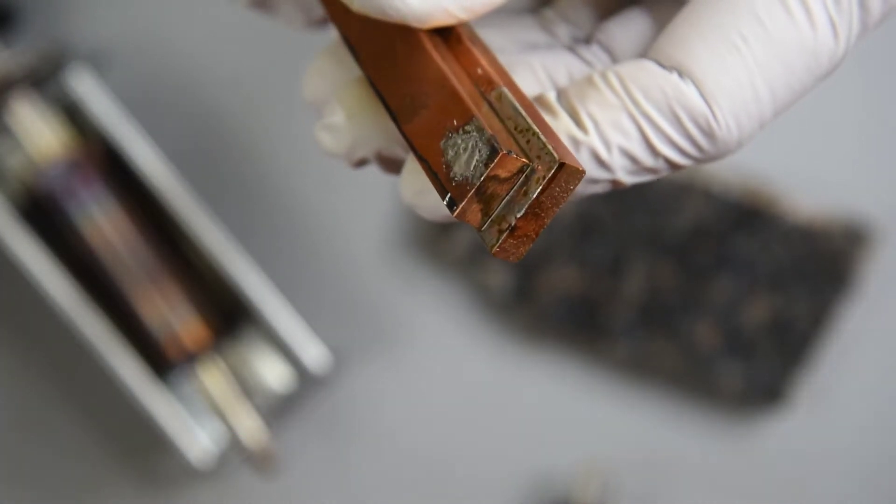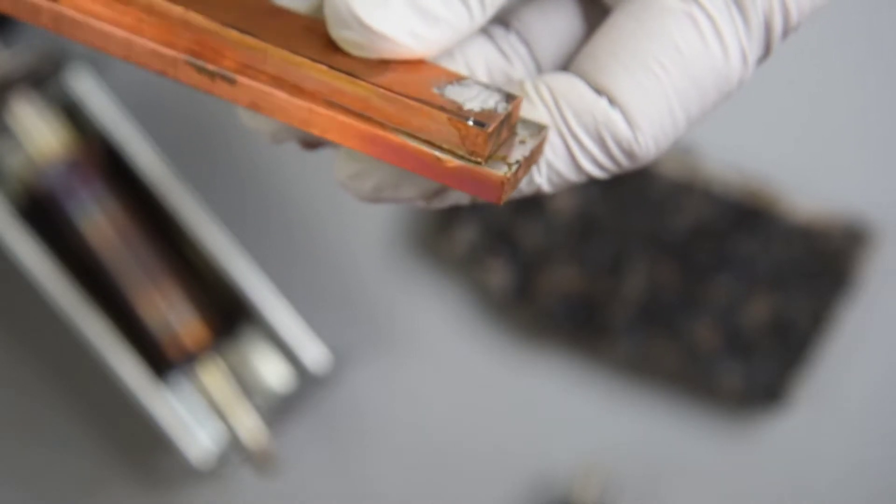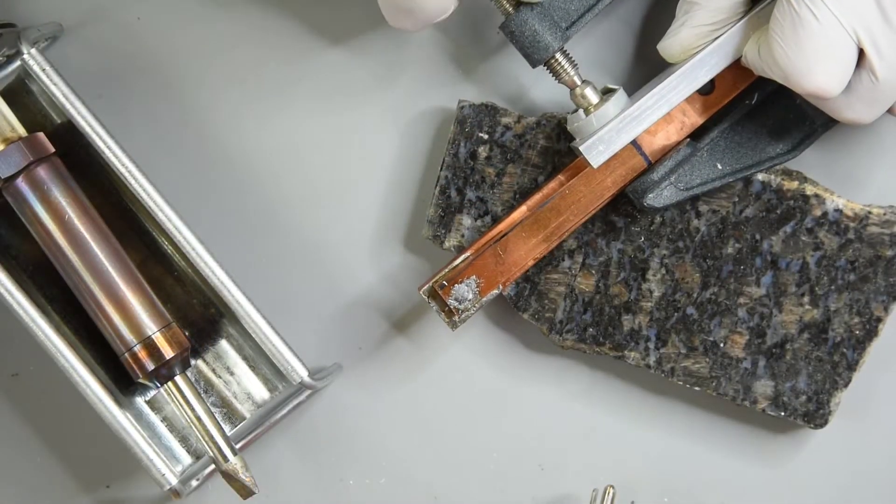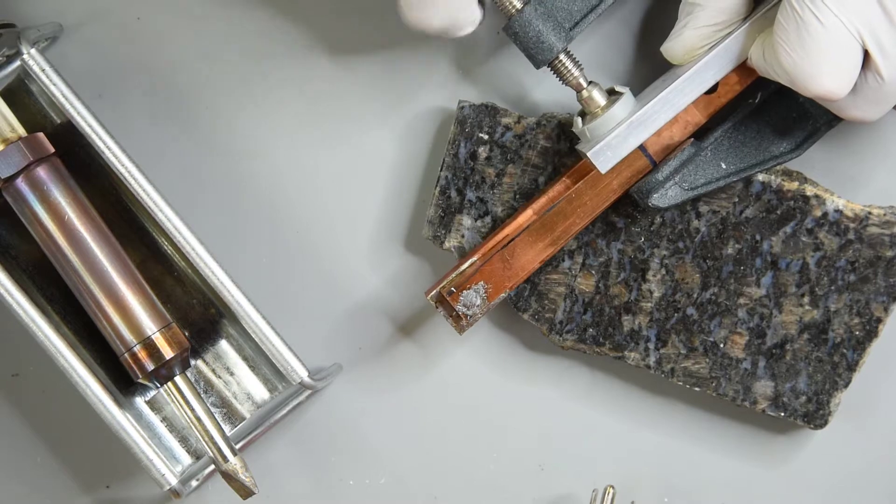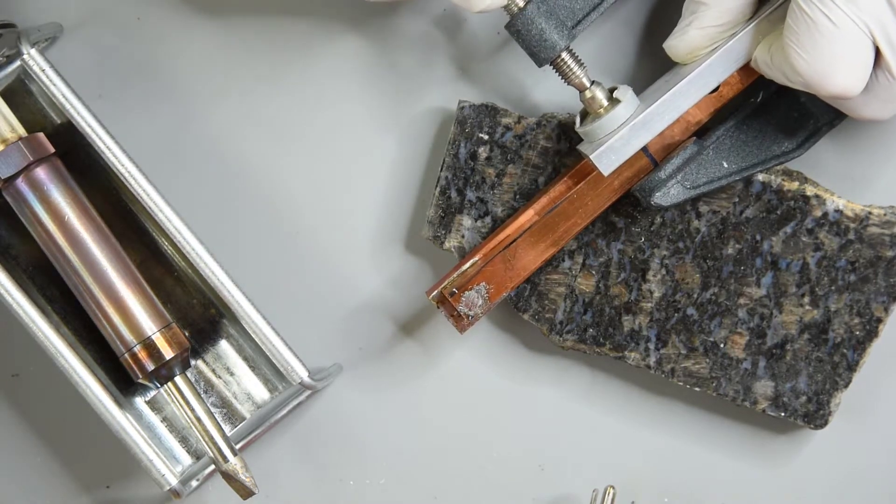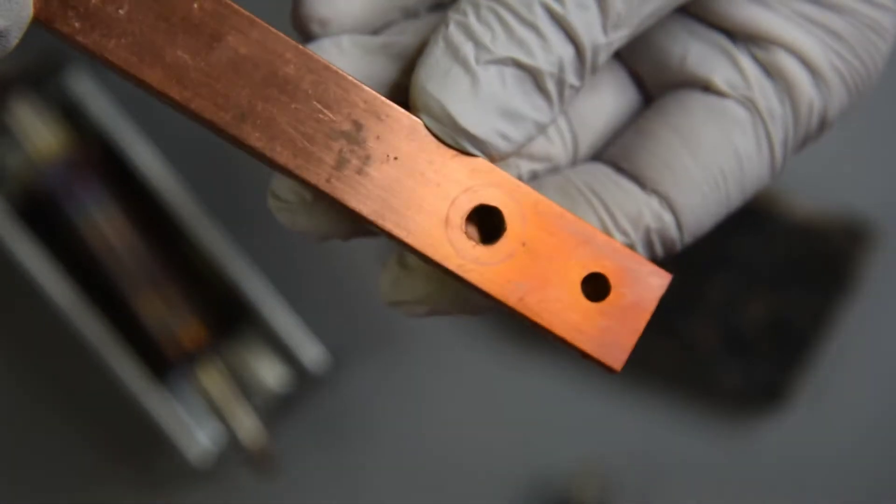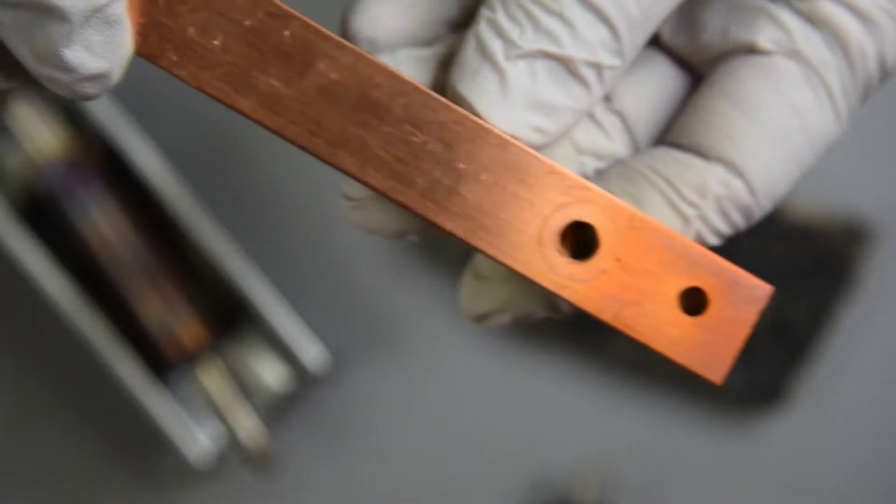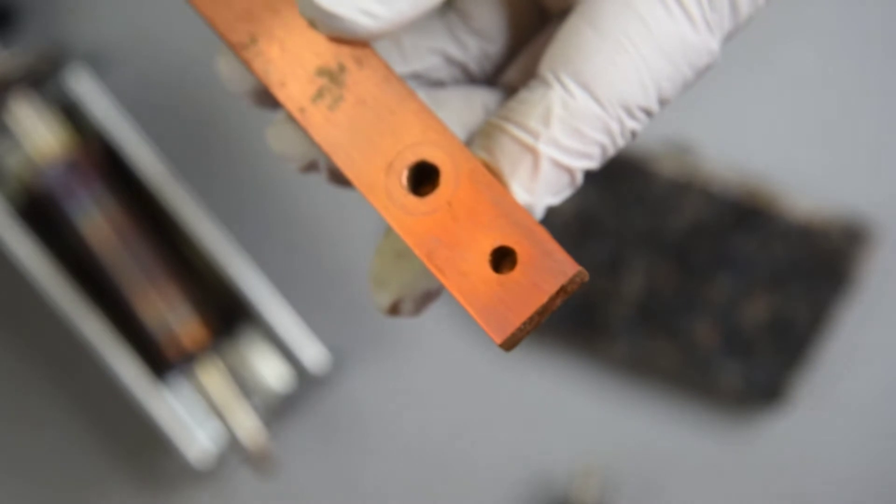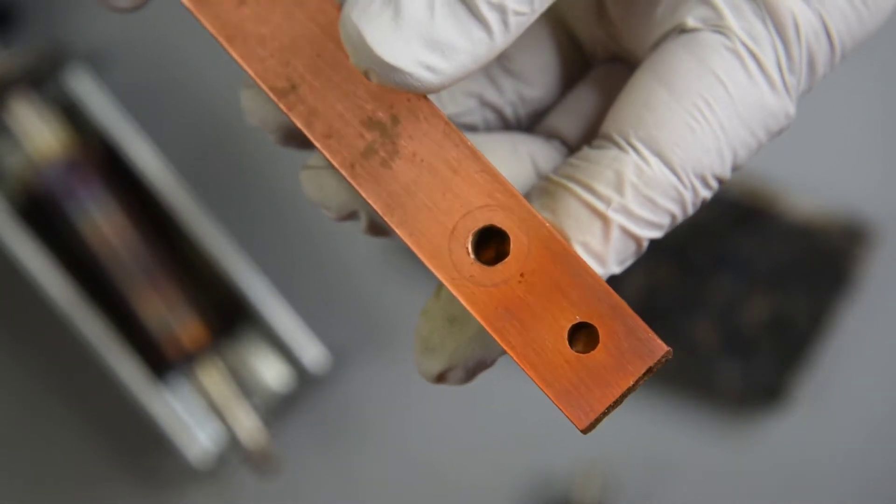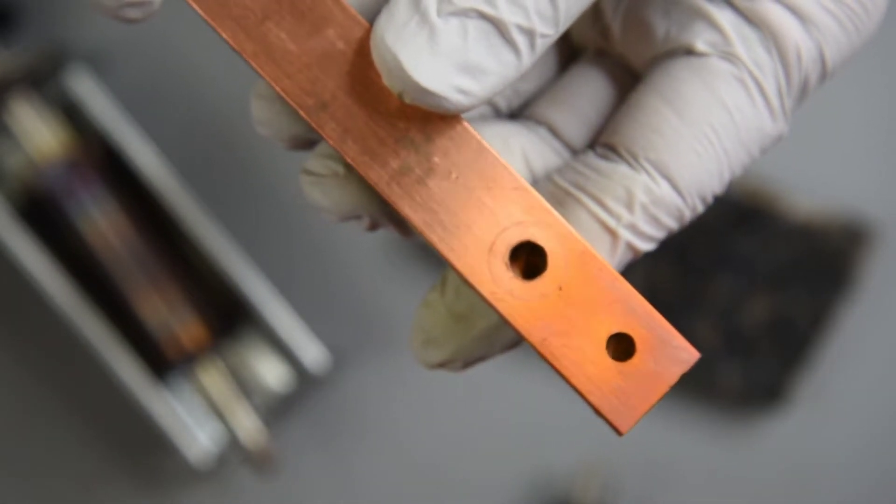Looks like the solder flowed great. Can't get the top piece to budge, so I don't think it's a cold solder joint. Can't really see it on camera, but it looks like the solder flowed all the way around the holes. Very nice. Guess I'll have to heat it up and pull them apart to know for sure.